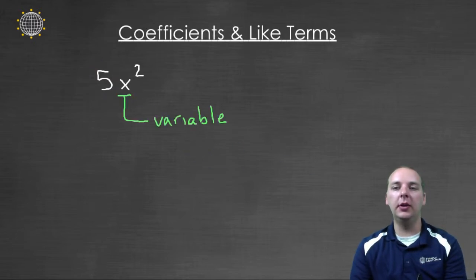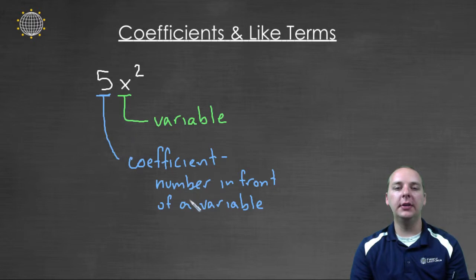The coefficient is just a numerical value that occurs in front of a variable. So again, we know what a variable is, and a coefficient is the number in front of that variable. So every variable has a coefficient.